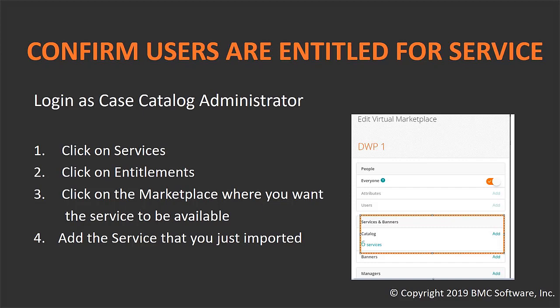Once you click on Manage Catalog, you will be presented with the Services section. Within Services, click on the Entitlement section. You will see if there is a marketplace defined, or you can publish it to the virtual marketplace that is available for all users. Click Edit on the marketplace where you want to publish this service and click Add.